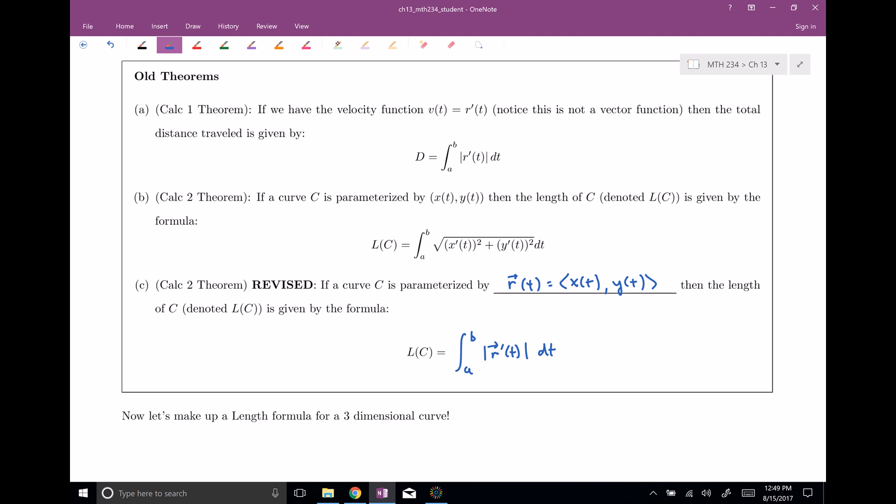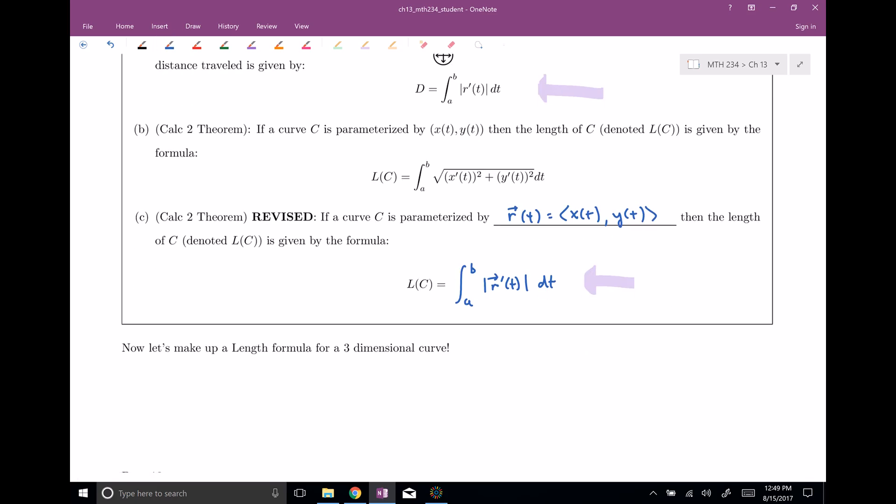And now this is a vector, right? So this is a vector function, really. And so this is a way that we can kind of revise or rewrite our calc two formula. And now notice, when you look at this one here, it looks very similar now to our calc one formula, right? Back when we just had a single variable. Now they look very similar, it's just this one is a vector instead of just a scalar function.